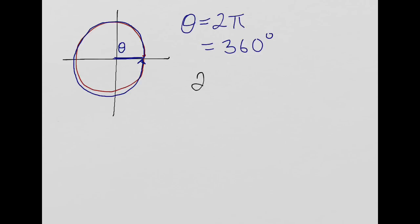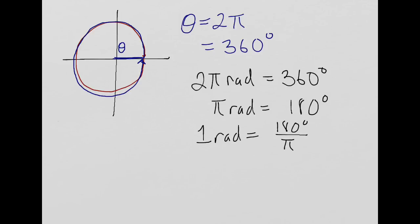So, 2 pi radians is 360 degrees, or pi radians equals 180 degrees. And if you divide these out, we get 1 radian equals 180 degrees over pi, and 1 degree equals pi over 180 radians.